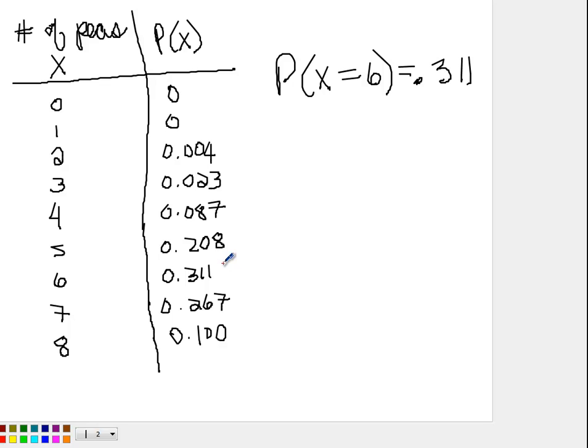Let's say you wanted to figure out the probability of getting 6 or more. So, 6 or more would be probability that X is greater than or equal to 6. So, what you would do is, you would look at all the probabilities greater than or equal to 6. So, that would be 0.311 plus 0.267 plus 0.1. And you would add up all three of those numbers.